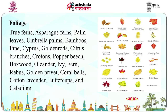Some common examples of foliage include true ferns, asparagus ferns, palm leaves, umbrella palms, bamboos, pine, cypress, golden rods, citrus branches, crotons, copper beech, boxwood, oleander, yew, fern, rebus, golden privet, coral bells, cotton lavender, buttercups, and caladium.